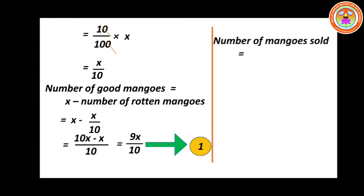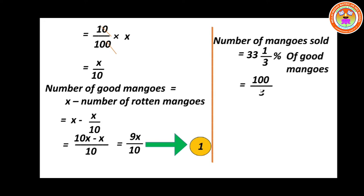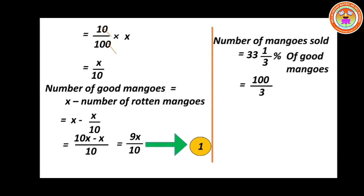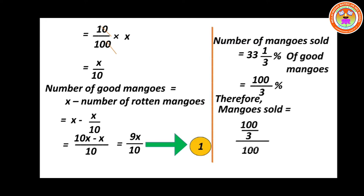Now find the number of mangoes sold. How much mangoes did he sell? Number of mangoes sold — what is given in the question — is 33 and 1/3 percentage of good mangoes. So from the good mangoes he sold 33 and 1/3 percentage. First convert the mixed fraction into a fraction: you will be getting 100 by 3. That is, 33 into 3 is 99 plus 1, giving 100 divided by 3 percentage. So number of mangoes sold equals 100/3 divided by 100 into good mangoes, which is 9x divided by 10.